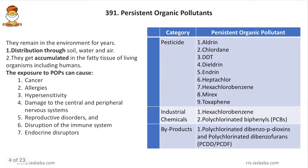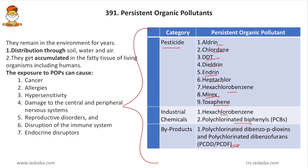The list of persistent organic pollutants includes pesticides like aldrin, chlordane, DDT, dieldrin, endrin, heptachlor, hexachlorobenzene, mirex, and toxaphene, as well as industrial chemicals like hexachlorobenzene, polychlorinated biphenyls, polychlorinated dibenzodioxins, and polychlorinated dibenzofurans. UPSC has asked individually about these chemicals — DDT, heptachlor, and biphenyls have all been asked in previous years, so each chemical deserves individual research.